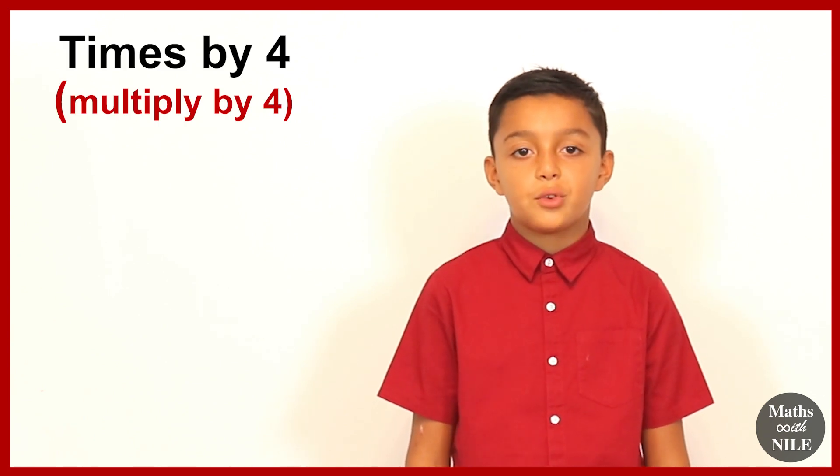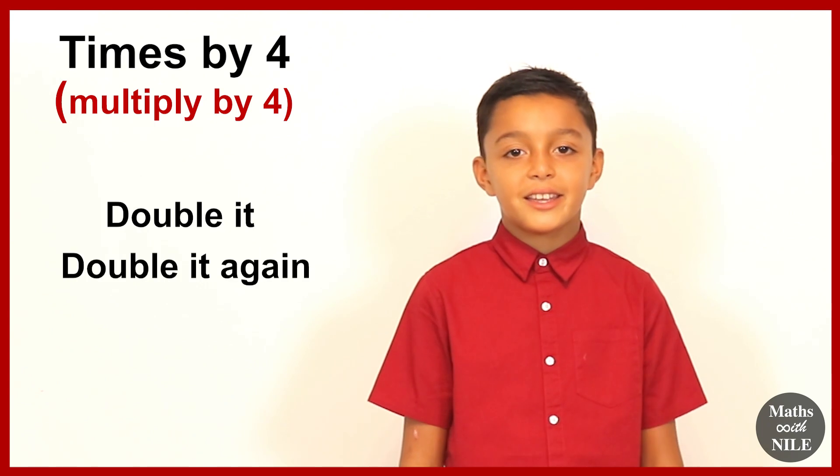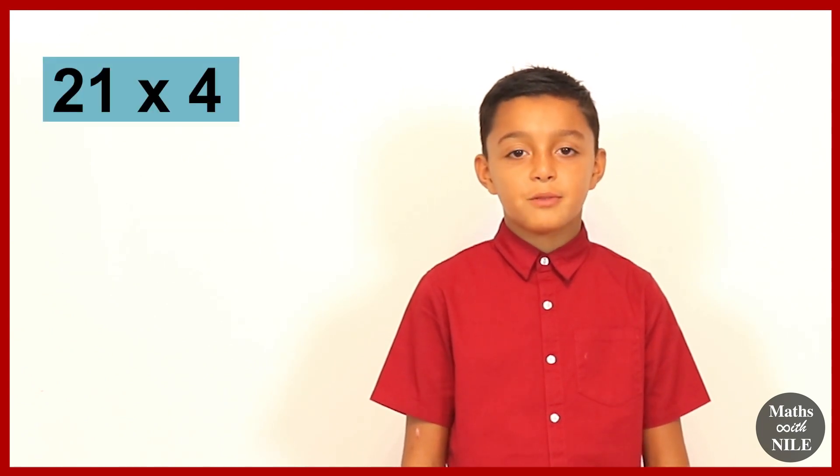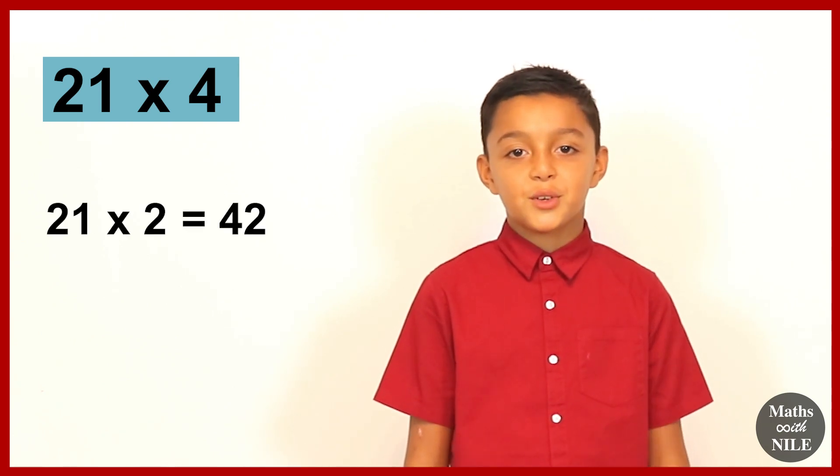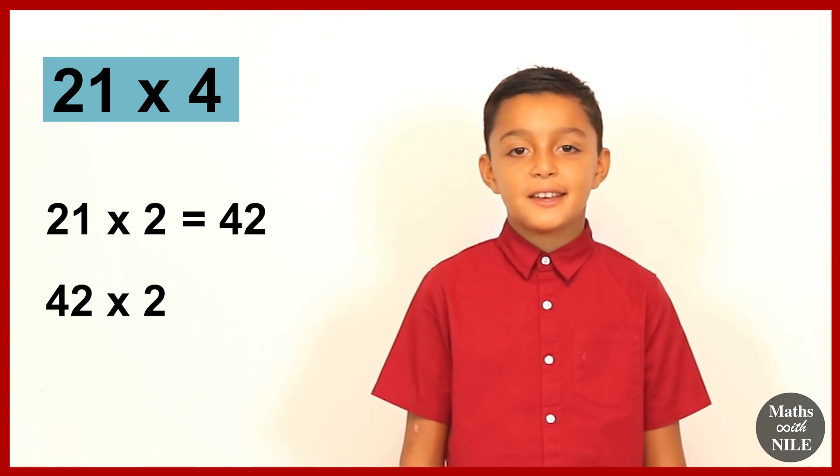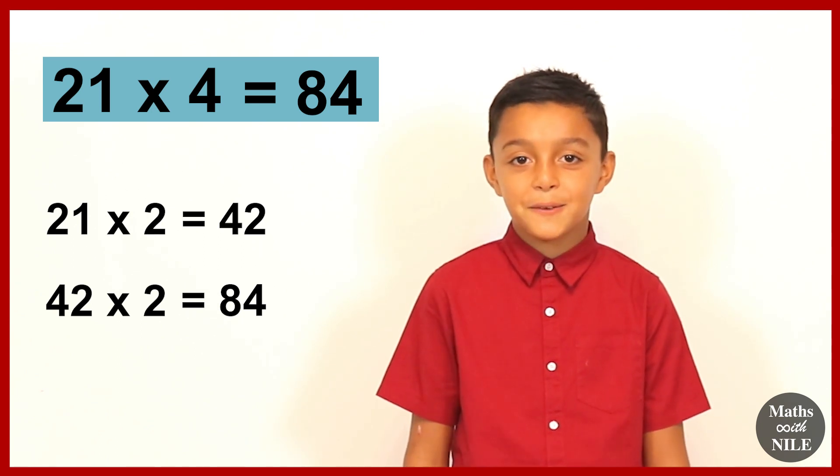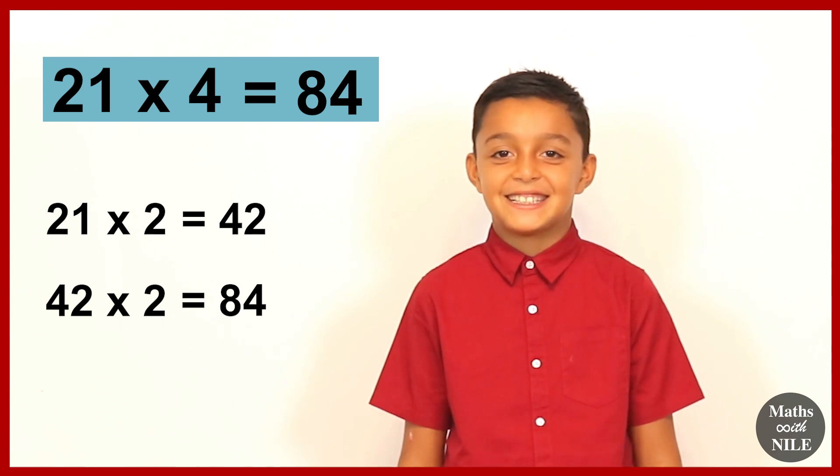What are we doing with the next couple questions Niall? We're timesing by 4. And what's the quick way to times by 4? You double it and double it again. Brilliant, so can you go on to number 11? So 21 times 4, so we'll double 21, which is 42. And then we'll double 42, which is 84. So that means 21 times 4 is 84. How easy was that? Easy enough. Easy enough.